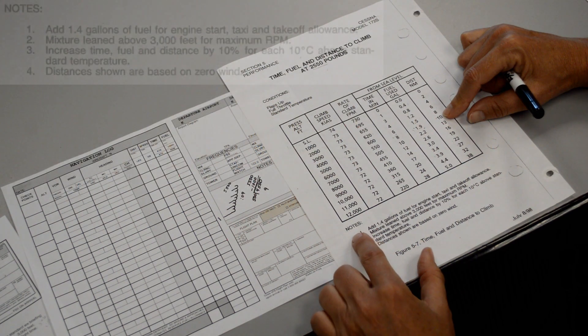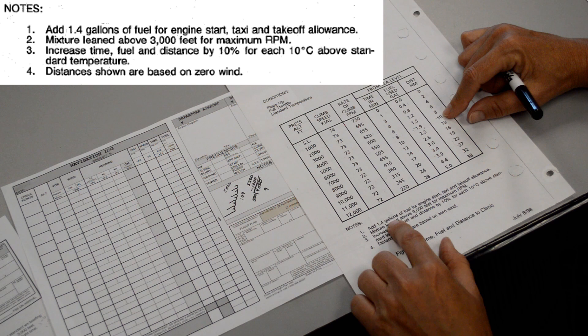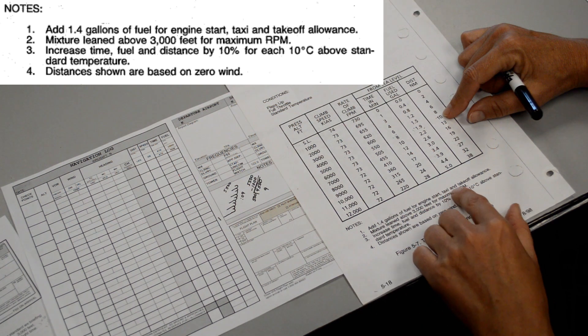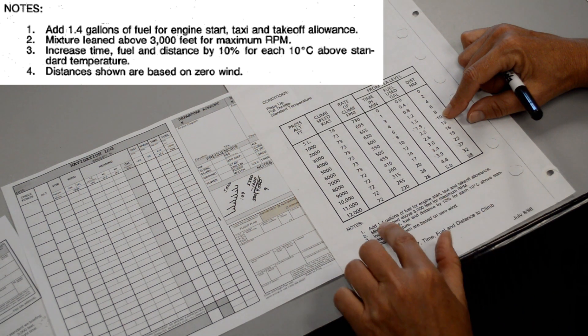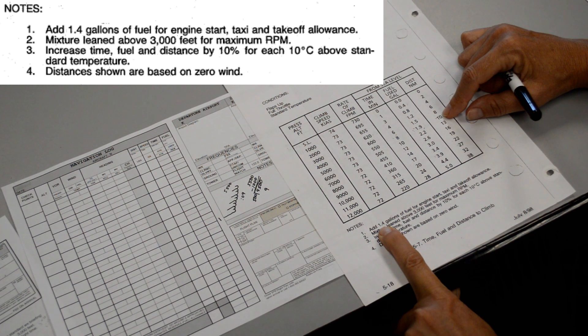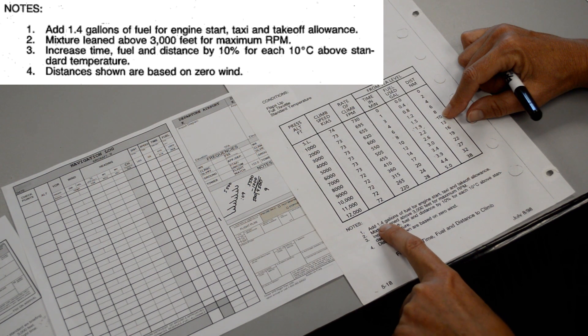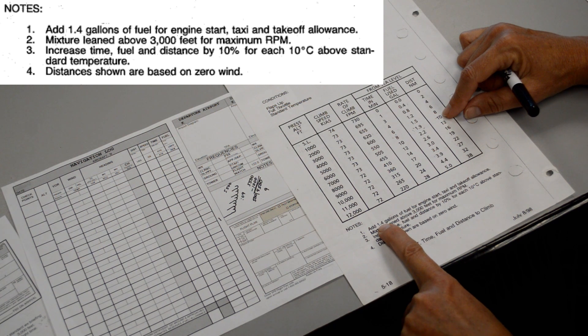Be sure to pay attention to the note section. It says to add 1.4 gallons of fuel for engine start, taxi, and takeoff allowance. Well, if you're departing from an airport that's very busy and you possibly could be number five in line for takeoff or maybe you have a really long taxi, you may consider adding more fuel than just using the 1.4. So I would definitely round this up to two gallons or even 2.5 gallons to be on the safe side.